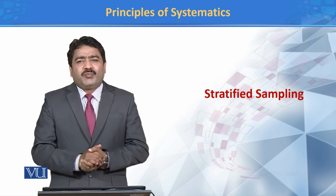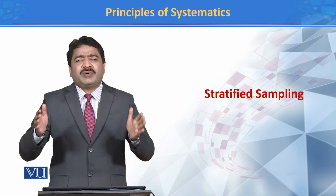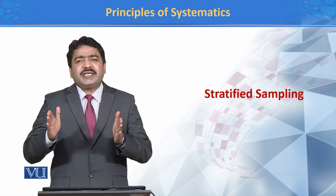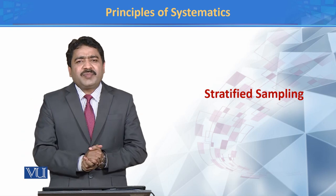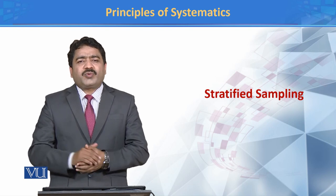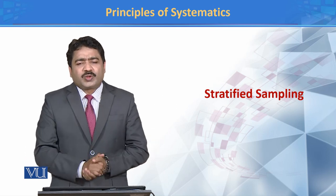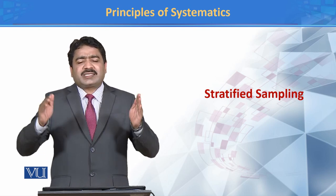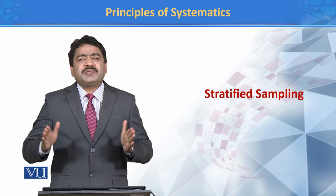हम मुख्तलिफ जो human beings हैं, उनका कोई data collect करना चाहते हैं. हम ये मालूम करना चाहते हैं कि जो smoking की habit है, ये किस age group के individuals के अंदर ज्यादा है. अब हम तीन age groups बनाते हैं: एक age group 1 से 20 तक है, दूसरा 21 से 40 का है, और तीसरा 41 से above. तो हमने अपनी population को different strata के अंदर divide कर लिया, based on some specific criteria.